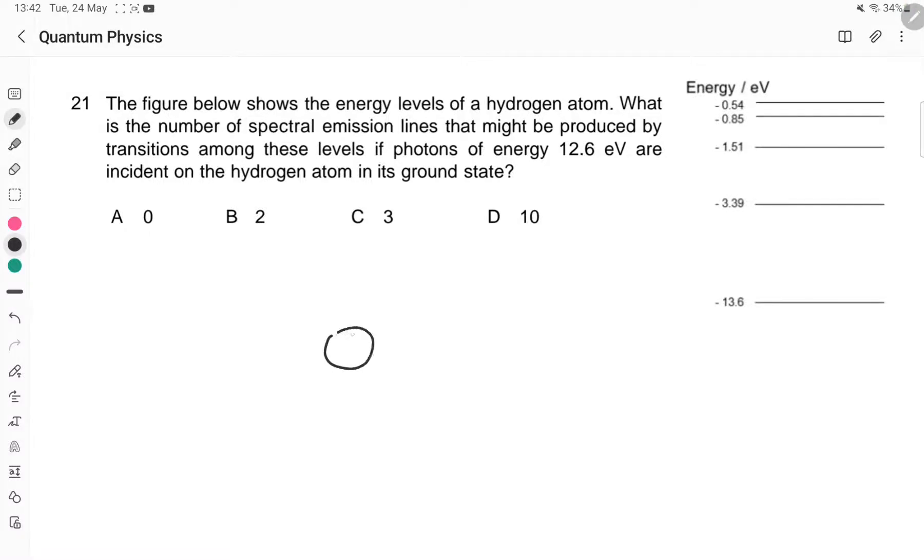In this question we have a hydrogen atom, and we have photons striking these atoms. We have many photons and many of these atoms. So once again, let's write this energy level diagram.